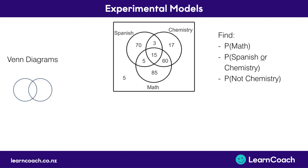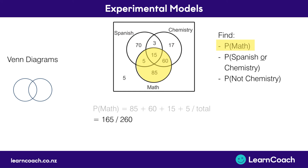Lastly, if we look at Venn diagrams, we're going to find the probability that any student will take math, the probability they take Spanish or chemistry, and the probability they don't take chemistry. Starting with the probability of taking maths, we look at the math circle, add all the numbers in it, and divide by the total: 85 plus 60 plus 15 plus 5, divided by the total, which equals 165 divided by 260, giving us 0.635.